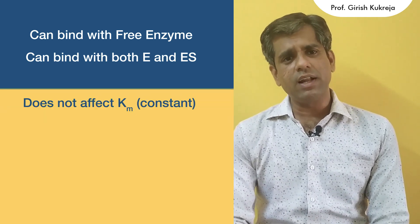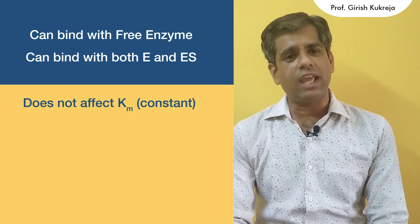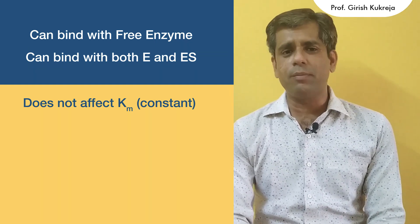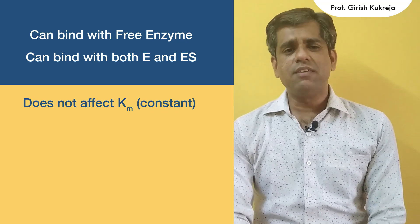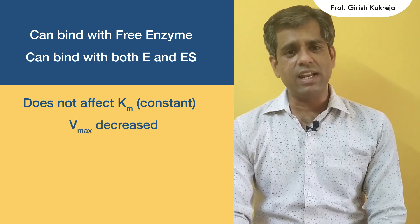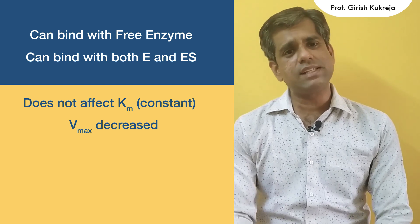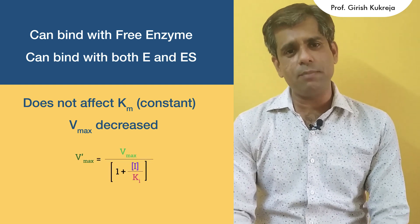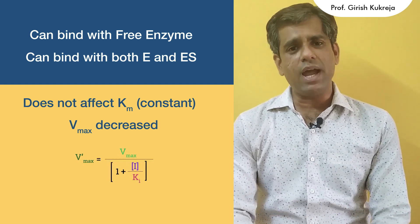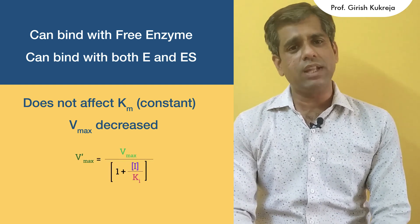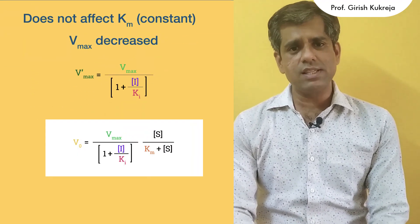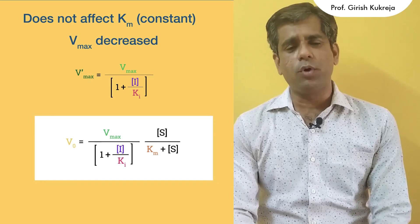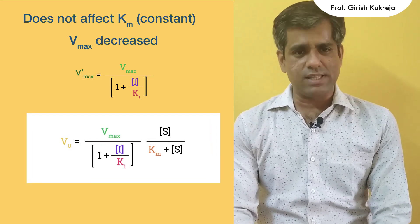Therefore, this inhibitor does not affect the value of Km. So in the presence of a non-competitive inhibitor, the value of Km remains constant. Whereas the value of Vmax is decreased — it is decreased by the factor of 1 plus I upon Ki. So we have an altered value of Vmax, that is V'max, where V'max is equal to Vmax upon (1 plus I upon Ki). So the final equation we get is: V0 = [Vmax / (1 + I/Ki)] × S / (Km + S).